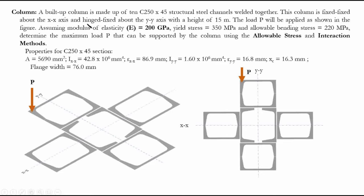The column is fixed-fixed about the XX axis and hinged-fixed about the YY axis with a height of 15 meters — these are the boundary conditions we'll use in the slenderness calculation. The load P is applied as shown in the figure. The modulus of elasticity is 200 GPa, yield stress 350 MPa, and the bending stress 220 MPa. Determine the maximum load or capacity of the column using the allowable stress and interaction methods.